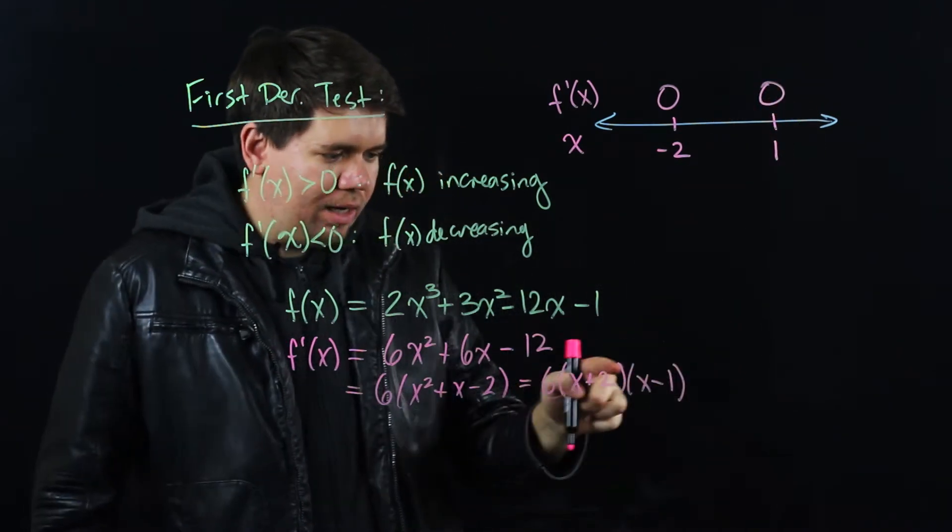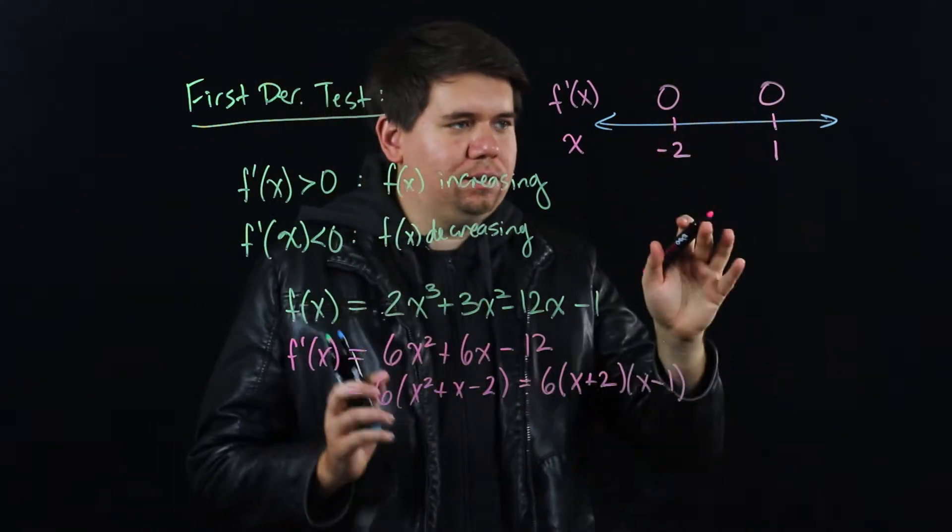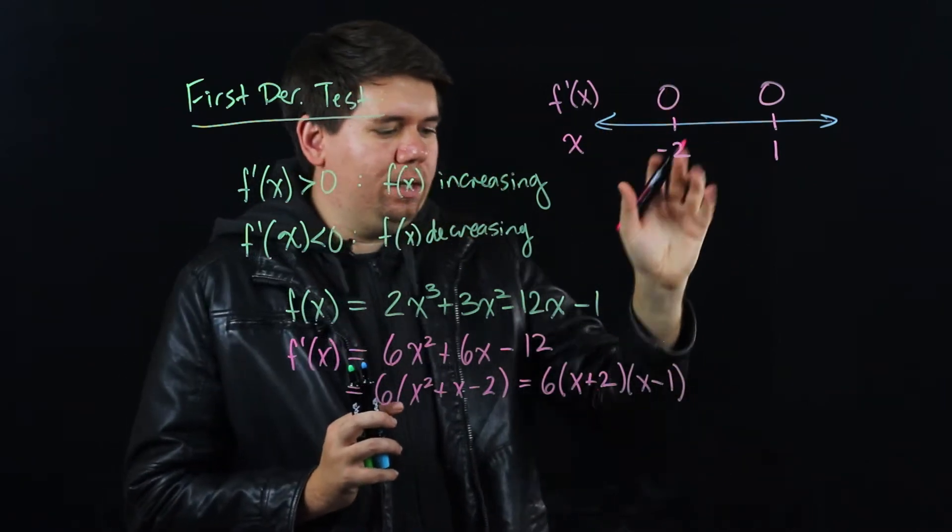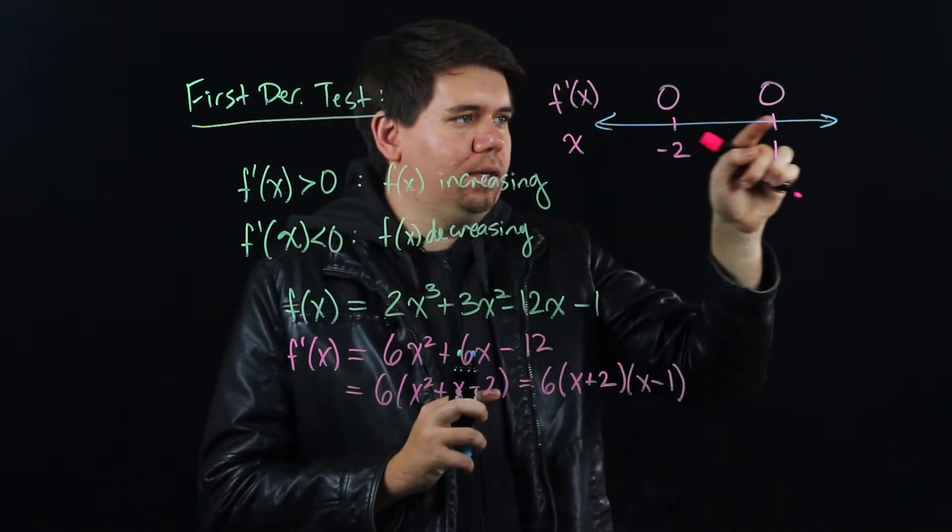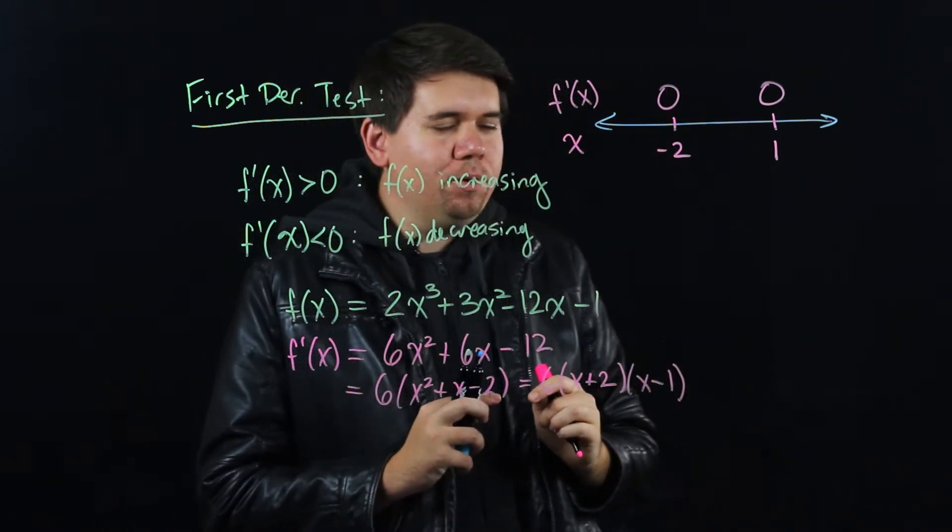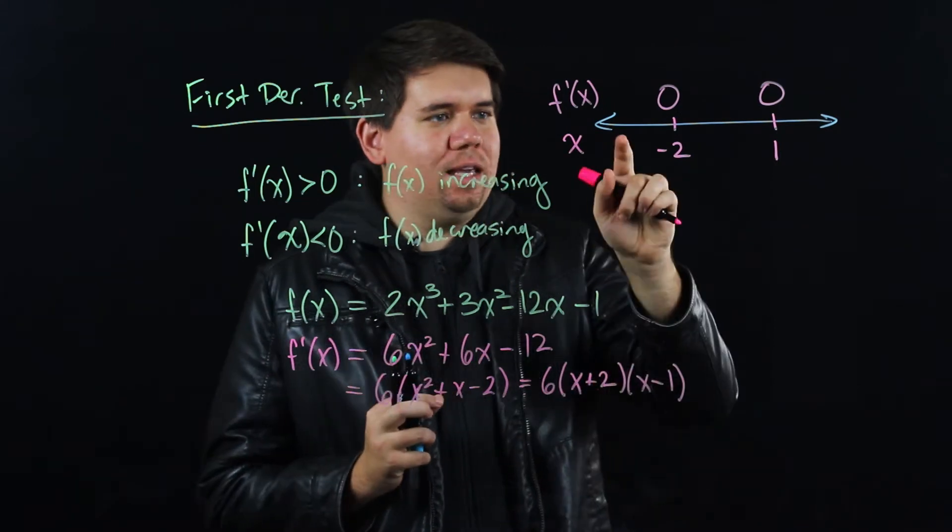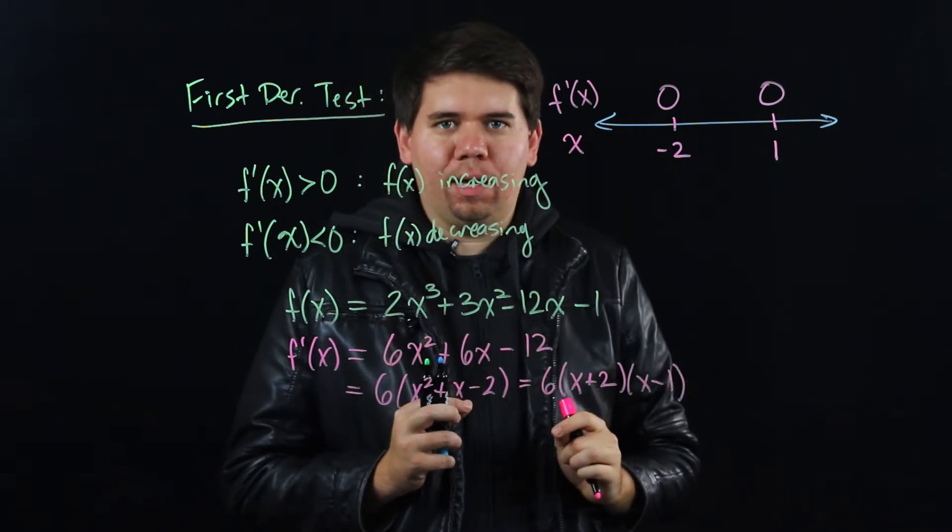If I also had other values that made it so the derivative didn't exist, I would want to note those as well. But these are the only ones where the derivative is 0, so I'm going to write those down, and I'm going to ask what happens at the other points on this number line.